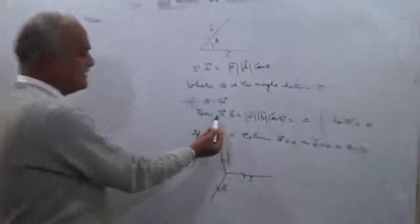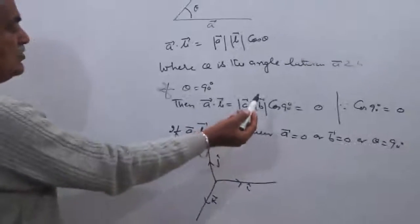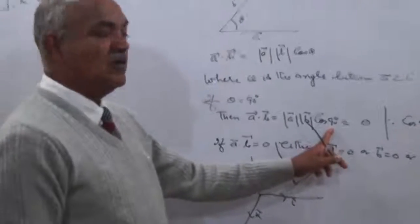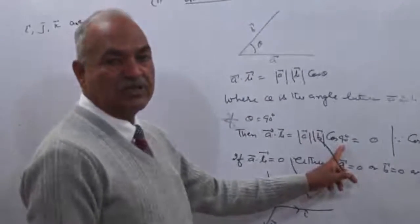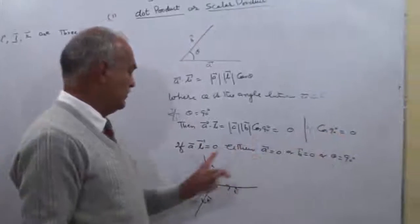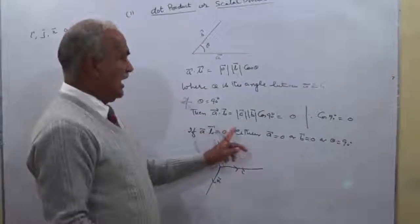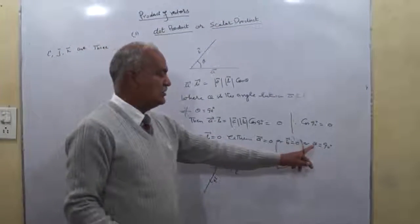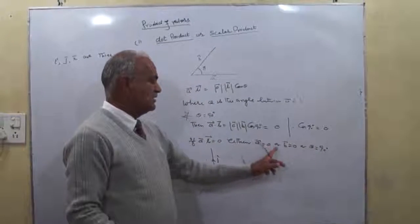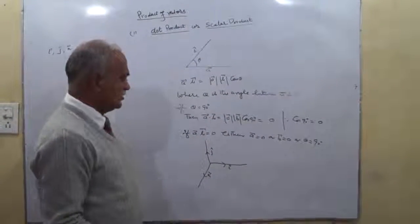If theta is 90 degrees, then A dot B is equal to 0, because cos 90 is equal to 0. If A dot B is 0, it means either A is 0, or B is 0, or theta is 90 degrees. If any one of these conditions holds, then A dot B is equal to 0.